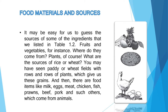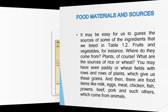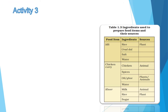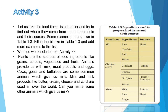Milk, eggs, meat, chicken, fish, prawns, beef, pork — इन सबका source क्या है? इनका source animals है। Activity 3 में वही करना है जो Activity 1 और 2 में food items और उनके ingredients लिए थे — उन ingredients का source क्या है, वो लिखना है। Comment box में जरूर बताना कि कौन से ingredient का source क्या है।